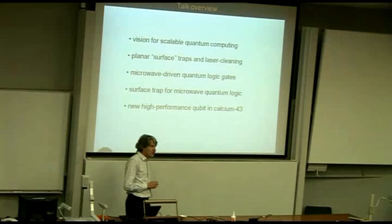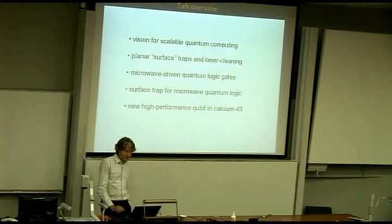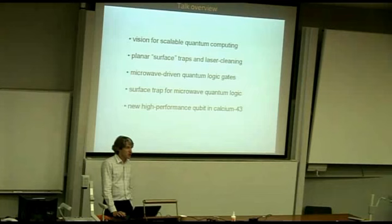I'm going to talk about the vision for scaled quantum computing, a particular type of ion trap important for scaling up called a surface electrode ion trap or planar trap, microwave-driven quantum logic and how it works, a particular trap we've built to demonstrate that in Oxford, and a new high-performance qubit we've been using — the calcium-43 qubit.